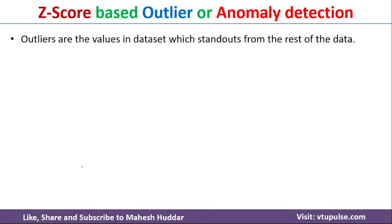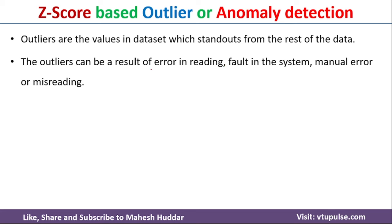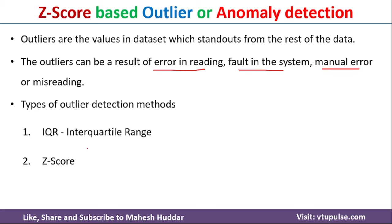As discussed in the previous video, outliers are the values in the dataset which stand out from the rest of the data. Outliers occur in a dataset because of the following reasons: error in reading, faulty system, or manual error.